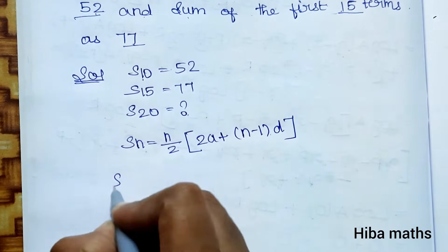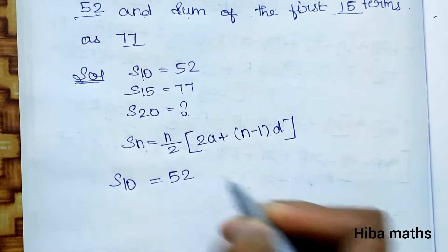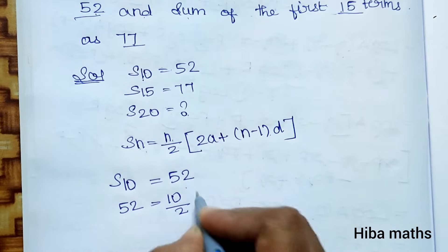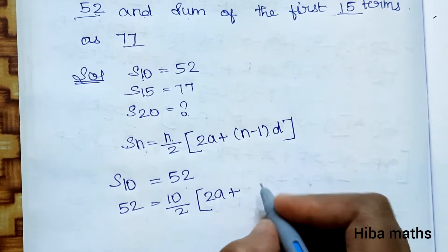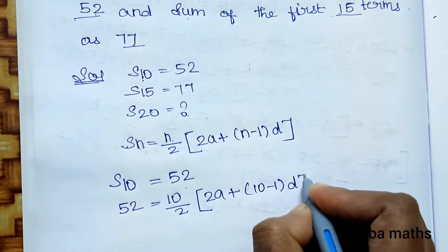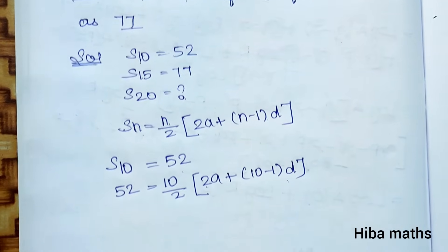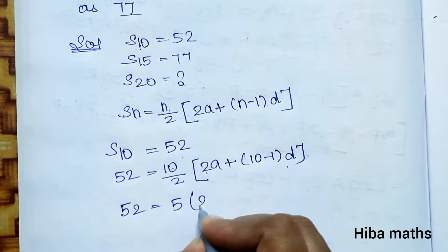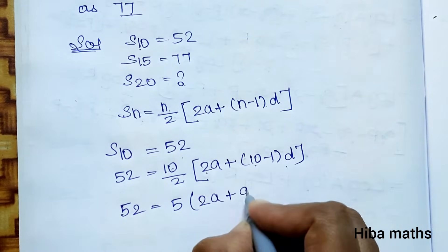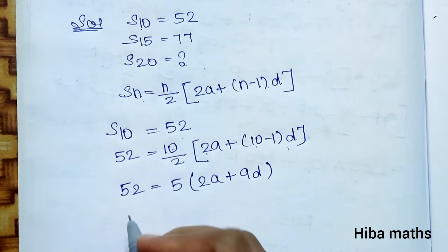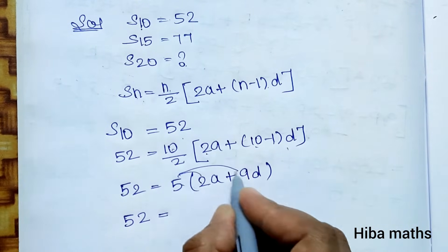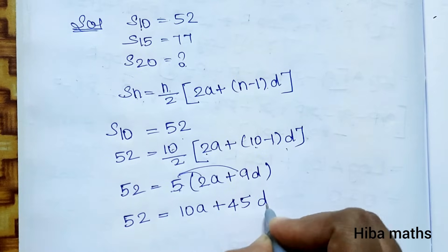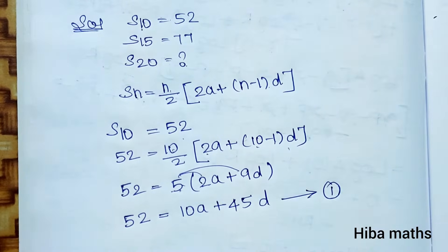S(10) is 52, so substituting: 52 is equal to 10 by 2 into 2a plus 10 minus 1 into d. Simplifying, 52 is equal to 5 into 2a plus 9d, which gives 10a plus 45d equals 52. This is the first equation.